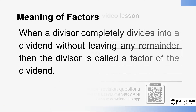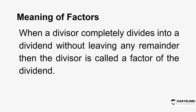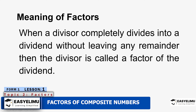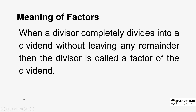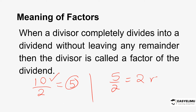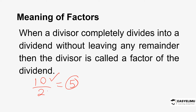So what does it mean when you talk about a factor? When a divisor completely divides into a dividend without leaving any remainder, then the divisor is called a factor of the dividend. For example, 10 divided by 2 equals exactly 5 — there is no remainder. This is different from 5 divided by 2, which gives 2 remainder 1. So in this case, 2 is not a factor of 5. The divisor is only considered a factor when it completely divides into the dividend with no remainder.